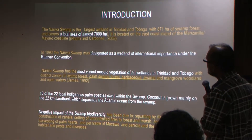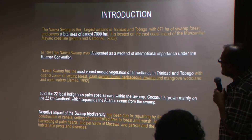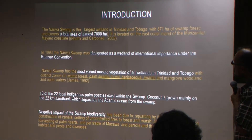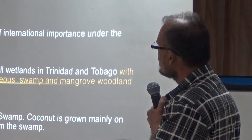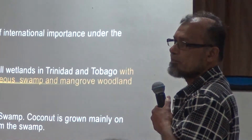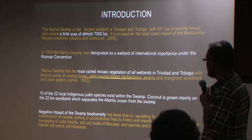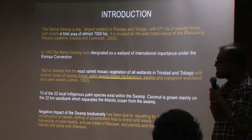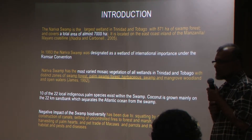With respect to the Nariva Swamp, it covers almost a total area of about 7,000 hectares and is designated as an internationally important area under the Ramsar Convention. In terms of vegetation structure, there are a lot of palm species distributed in this wetland area. There are 10 indigenous palms out of the 22 indigenous species found in Trinidad, and we also have coconut grown mainly along the coastline.